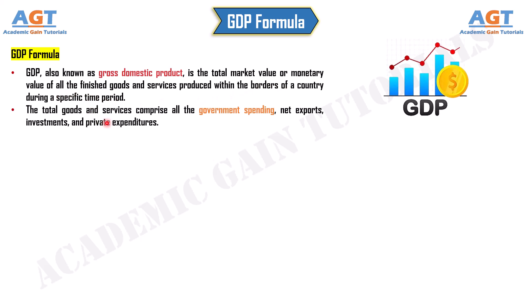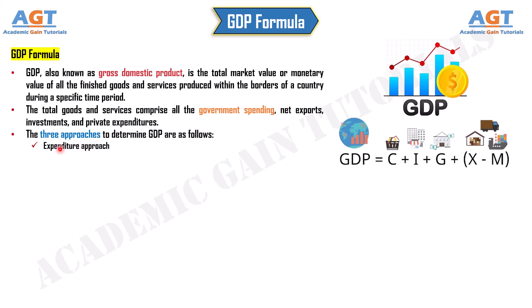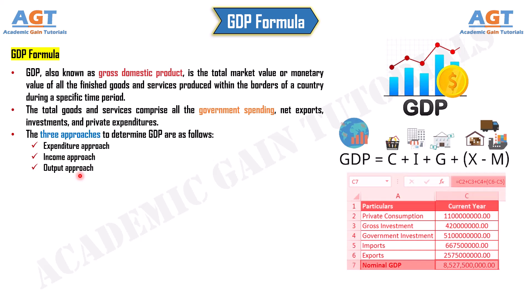The total goods and services comprise all the government spending, net exports, investments, and private expenditures. The three approaches to determine GDP are the expenditure approach, income approach, and output approach.